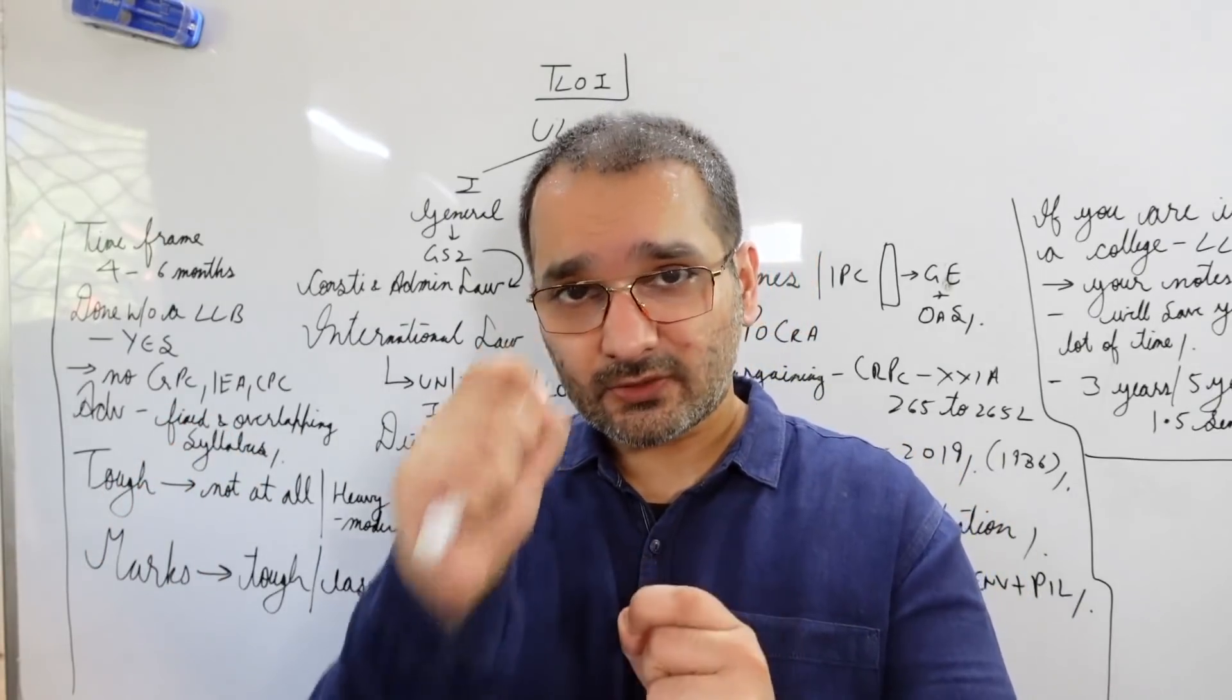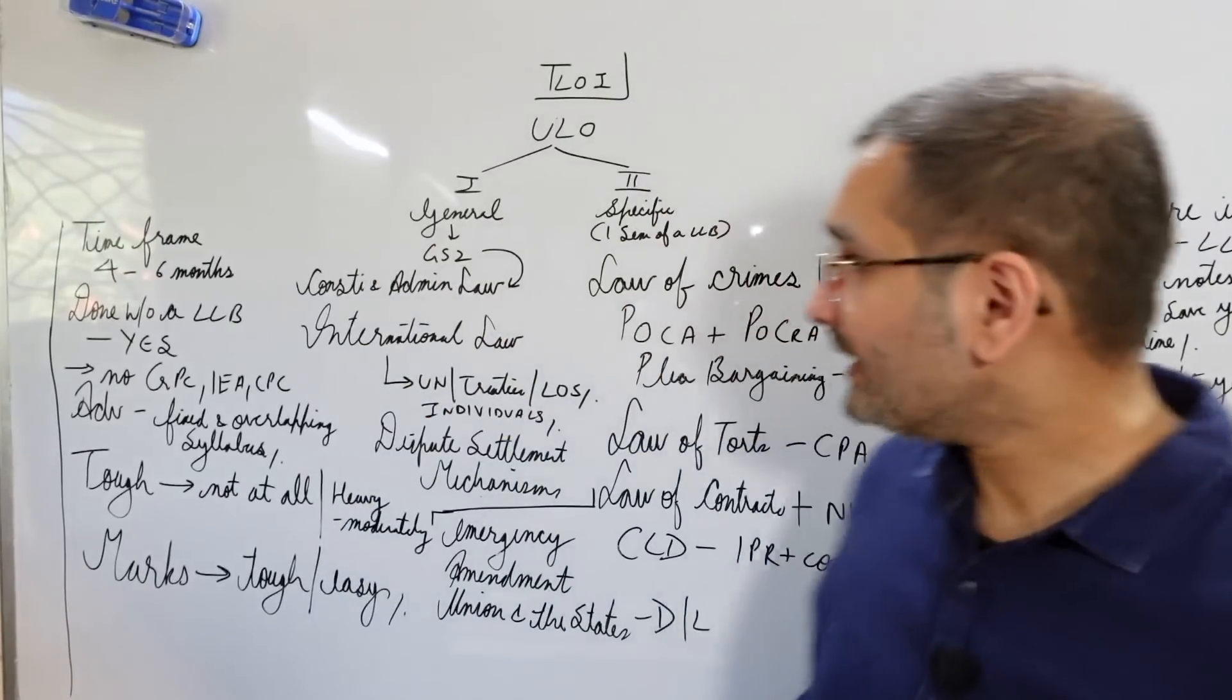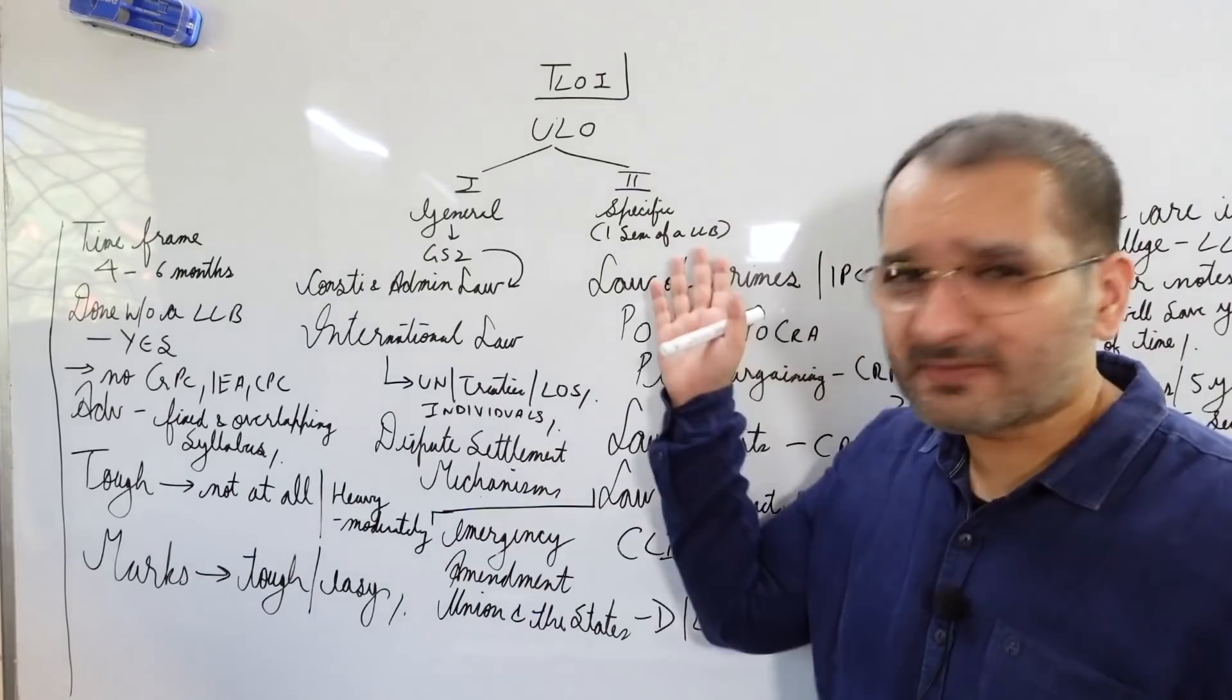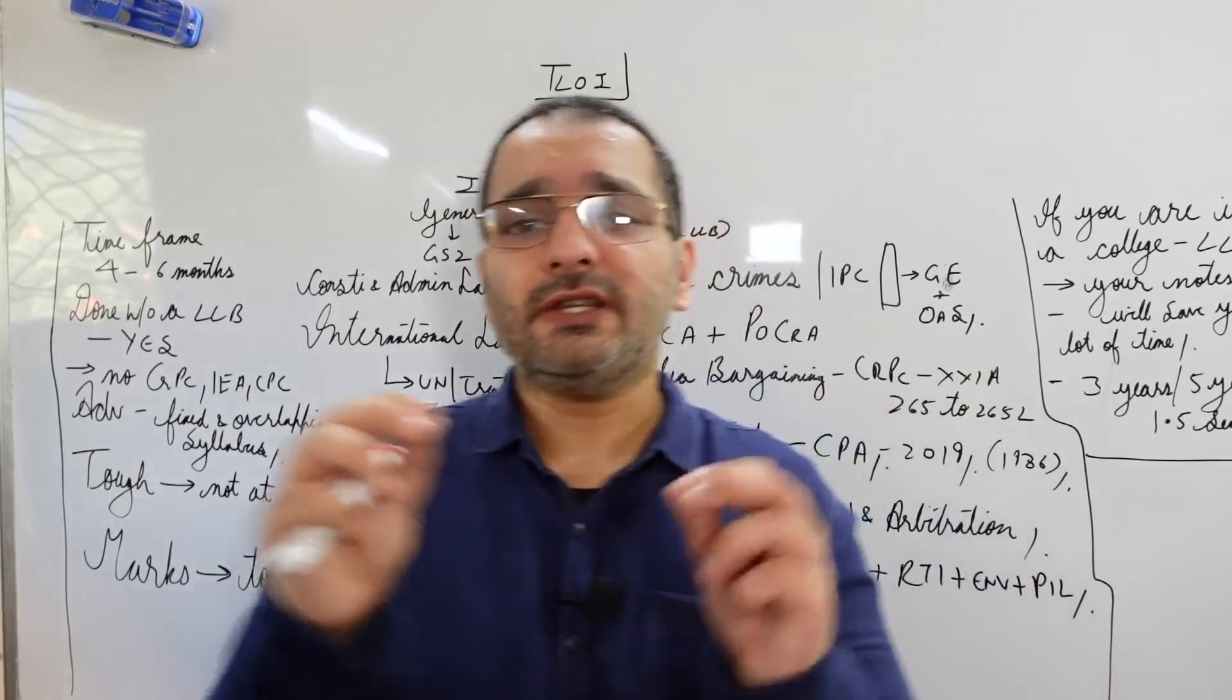So if you can quote the sections and if you can quote associated judgments, I believe that you can score very very well. Now paper 2 - paper 2 is pretty much one semester of a LLB.